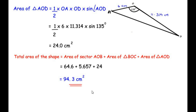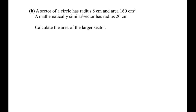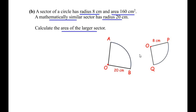The last sub-question: a sector of a circle has radius 8 centimeters and area 160 centimeters squared. A mathematically similar sector has radius 20 centimeters. We need to calculate the area of the larger sector. Drawing a rough figure, we have the larger sector AOB with radius 20 centimeters and the smaller similar sector POQ with radius 8 centimeters and area 160 centimeters squared.